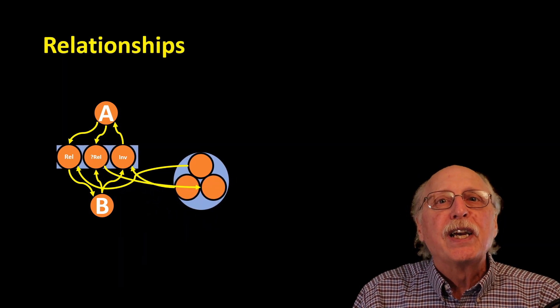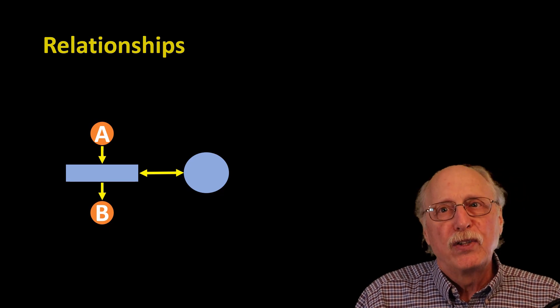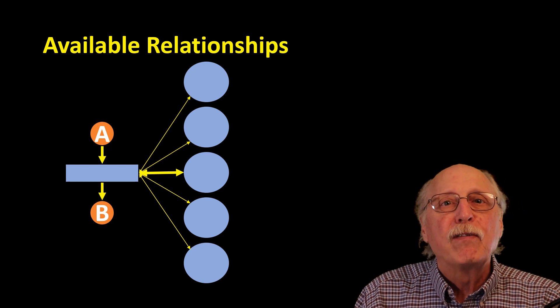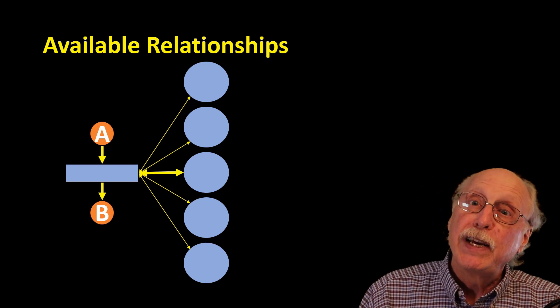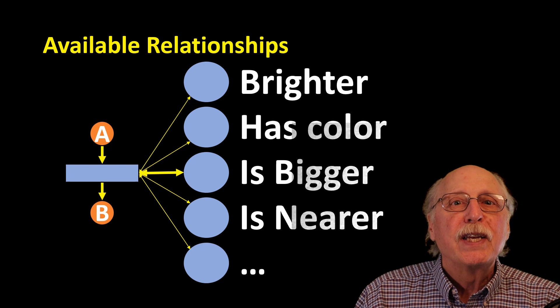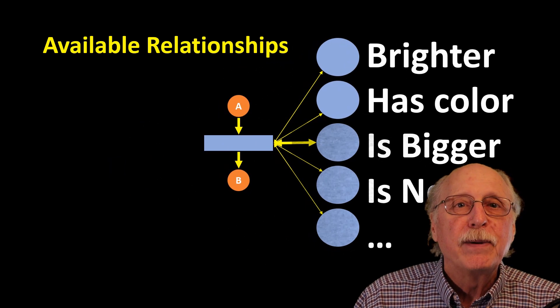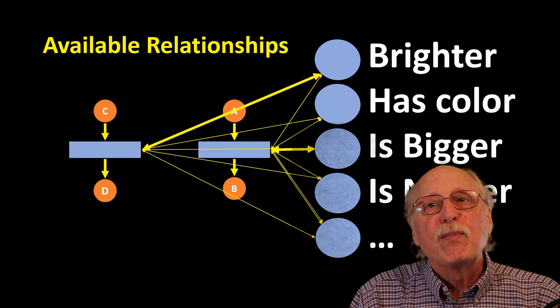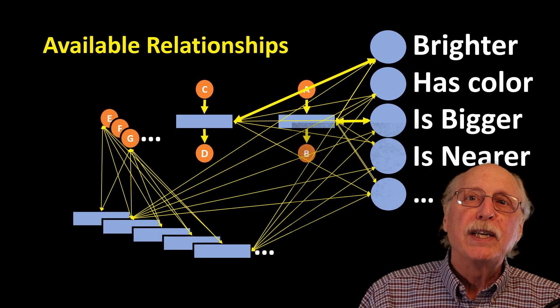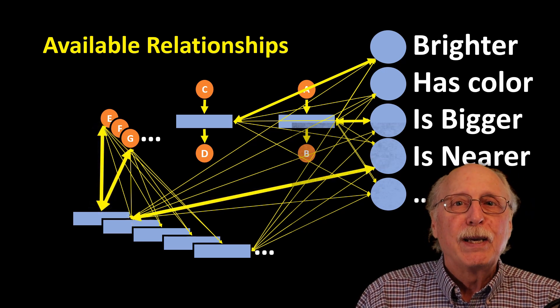By adjusting synapse weights, any relationship can be applied to any neuron pair within a cluster of thousands of neurons. In the same way as selecting a color, the meaning of a relationship can be selected from a large number of available relationships by adjusting a few synapse weights. So here we're representing that A is bigger than B, and here we're representing that C is brighter than D. In essence, the brain has a pool of relationship structures, and these can be pressed into service to relate any neurons in a cluster with any relationship by adjusting the weights of a few synapses.